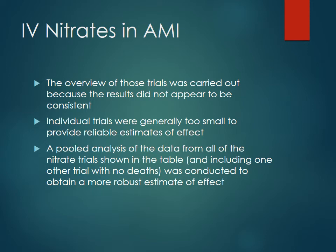The overview of those trials was carried out because a lot of the results did not appear to be consistent and some things were conflicting. Frequently, individual trials are generally too small to really provide reliable estimates of effect. Unless you have something that includes thousands of patients, it's very difficult to definitively say whether some sort of intervention or treatment is really going to have significant effects. So very frequently you'll see pooled analyses or meta-analyses of the data where they compare multiple trials with very similar interventions and patient populations, and you can review those and take all the information together to have a better, more robust estimate of the actual effect that the intervention is going to have.